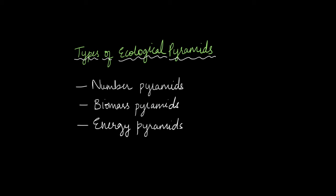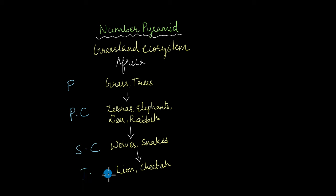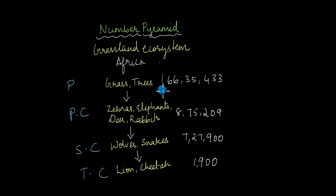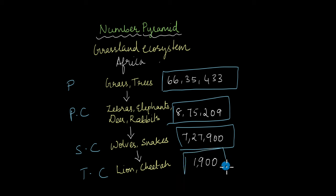We'll first start with number pyramids. This is how a typical food chain of a grassland ecosystem looks. The producers are grass, trees, and other plants, which are consumed by primary consumers like zebra, elephants, deer, and rabbit. These primary consumers are consumed by secondary consumers like wolves and snakes. Tertiary consumers like lion and cheetah eat either the secondary or primary consumers. If you were to count the number of individuals at all these trophic levels, you would see that producers are the maximum, and as we go up each trophic level the number begins to decrease, until at the tertiary consumer level the number is the least.